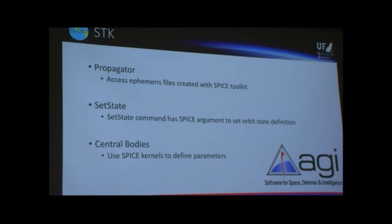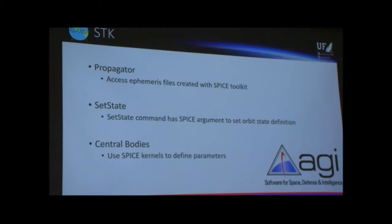Another cool thing about this toolkit is you can use it with a lot of other programs like STK, which we promote heavily in this class. You can use files from the C-SPICE database — ephemeris files — with what they call a SPICE propagator in STK. So you can use STK to pull from JPL's database of planetary ephemerides and other constants. The central bodies option in STK lets you get gravitational parameter constants that NASA has developed, and you can also get state information from these files.